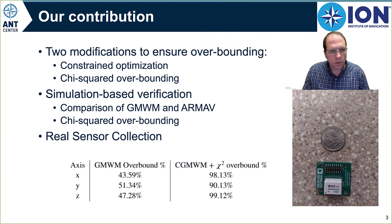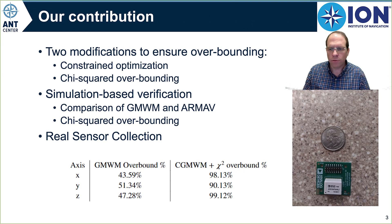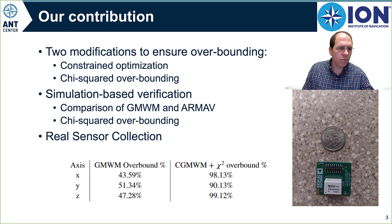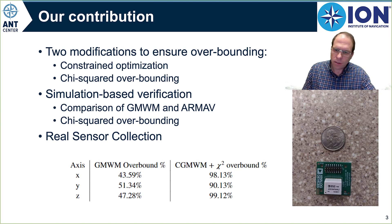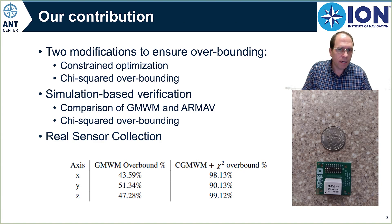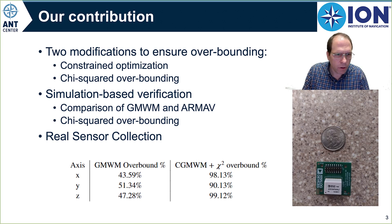We did this using two modifications to the prior techniques. We modified both GMWM and RMav to do this. The first is that we perform constrained optimization — rather than optimizing to get a best fit, we do a constrained optimization to make sure that we're overbounding. The second part is we do a chi-squared overbounding technique. Anytime you do a data collect with a sensor, you're only getting one sample of that data, but you want to make sure that that set of samples overbounds, or at least is a good representation of any set of samples you could get from that sensor. We do that using a chi-squared overbounding technique.